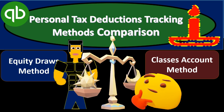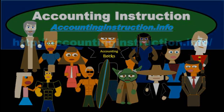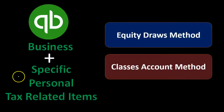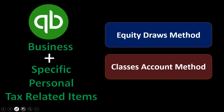In this presentation, we will compare the pros and cons of our two methods for tracking personal tax deductions on our business QuickBooks account. For more accounting information and courses, visit accountinginstruction.info. Our objective is to have our business and specific personal items tracked in one QuickBooks file. We've been looking at an equity draws method and the classes method within QuickBooks.